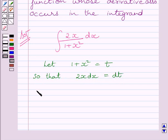We can write ∫(2x/(1+x²))dx = ∫(dt/t). Since 2x dx = dt and 1+x² = t, we substitute dt for 2x dx and t for 1+x².